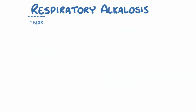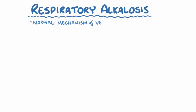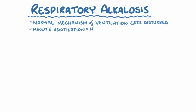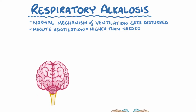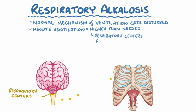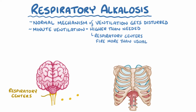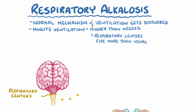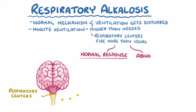In respiratory alkalosis, the normal mechanism of ventilation gets disturbed, and the minute ventilation goes higher than what's needed to balance the pH. For ventilation to increase, the respiratory centers have to start firing more than usual. This increased firing might be a normal compensatory response, or an abnormal response to a situation that doesn't really call for increased ventilation.